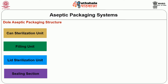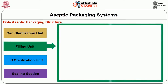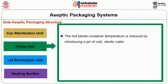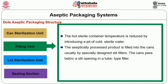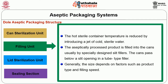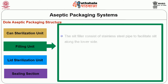The second fundamental unit is the filling unit. The hot sterile container temperature is reduced by introducing a jet of cold sterile water. The aseptically processed product is filled into the cans usually by specially designed slit fillers. The cans pass below a slit opening in a tube type filler. Generally, the size depends on factors such as product type and filling speed. The slit filler consists of a stainless steel pipe with a slit along the lower side.